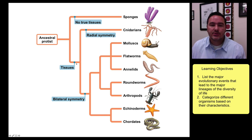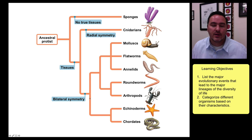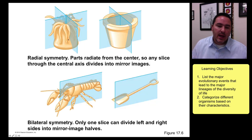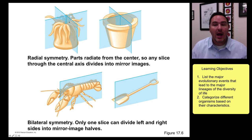Eventually tissues evolved, and then you had two types of body forms. Radial symmetry is seen in the Cnidarians, and bilateral symmetry is seen in the rest of animal life. Bilateral symmetry is when you can divide an organism into two halves — a left and a right side — whereas radial symmetry is more like a pie where you can cut it into multiple equivalent planes.